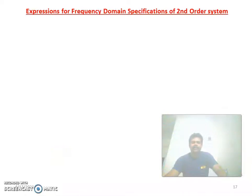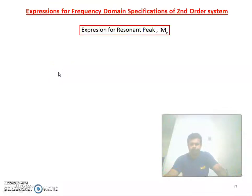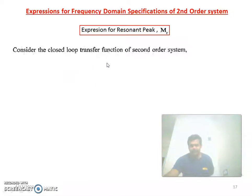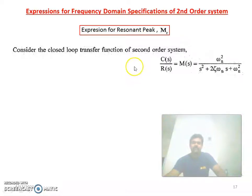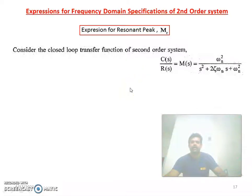Now we are going to see the expressions for frequency domain specifications of a second order system. First we are going to see the expression for resonant peak Mr. We are considering the closed loop transfer function of the second order system: C(s)/R(s) = ωn² / (s² + 2ζωn·s + ωn²). We have already studied this in the second unit.